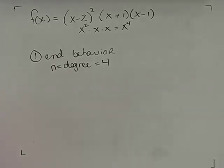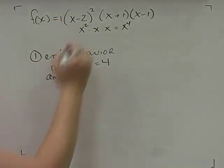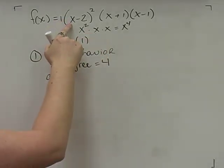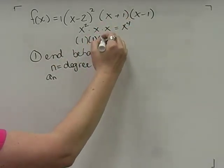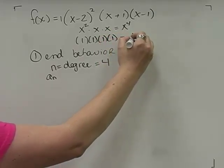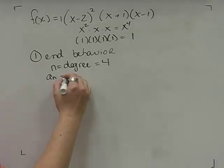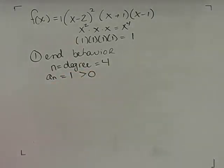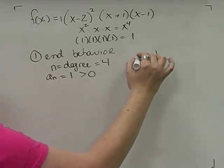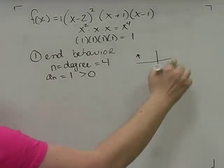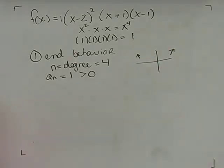The next thing I need before determining end behavior is the leading coefficient a_n. The coefficient on each x factor is 1, so when multiplied out the leading coefficient is 1, which is greater than 0. Since n is 4 (even) and a_n is positive, as x approaches negative infinity the graph goes to positive infinity, and as x approaches positive infinity it also goes to positive infinity.